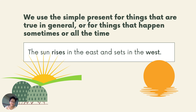In the sentence about the sun, 'rises' ends in s and 'sets' also ends in s, because 'the sun' is a singular subject. So the verbs are in their singular form, following subject-verb agreement rules.